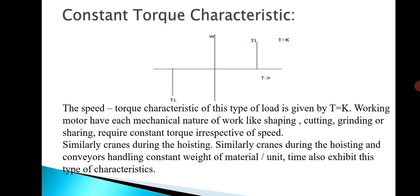Similarly, cranes during hoisting and conveyors handling constant weight of material per unit time also exhibit this type of constant torque characteristics. For example, a motor used to cut or shape a particular product requires constant load and constant torque. Cranes also require constant torque to lift a particular body. The examples are shaping, cutting, grinding, and shearing type loads, where constant torque characteristics are needed.